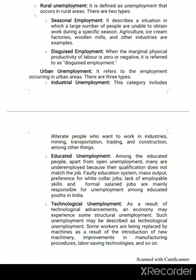The first urban unemployment is industrial unemployment. This category includes illiterate people who want to work in industries — mining industries, transportation industries, trading and construction, among other things. That kind of unemployment is called industrial unemployment.